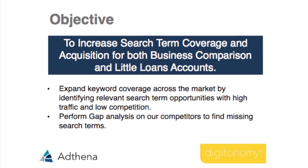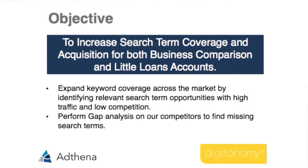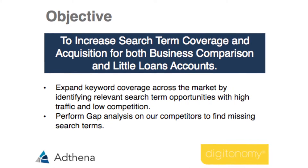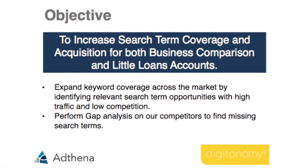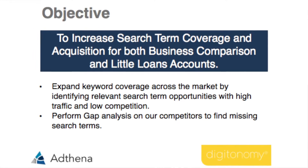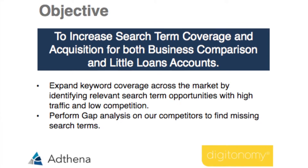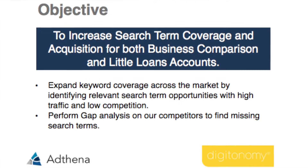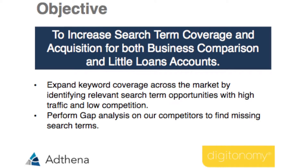We've been with Adthena for about a year now. The main thing we use it for is ad copy analysis — we look at competitors, what ad copy they're using, what's working for them, how long they've been using it. We use it for search terms as well, so if we're going to launch a new product, say van insurance, we'll start in Adthena and look at what competitors are bidding on, and build from there.